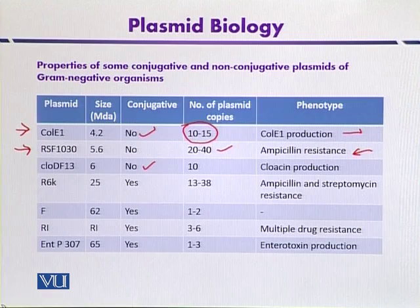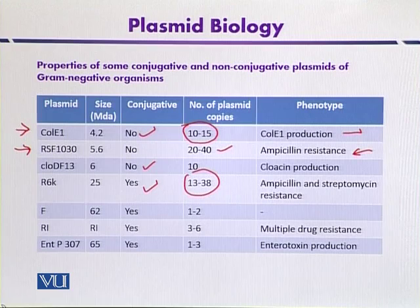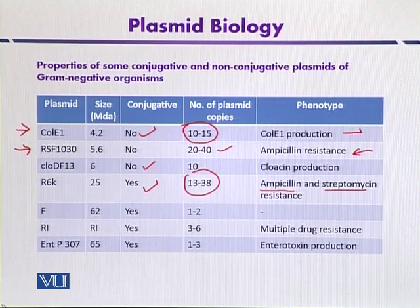R6K is an example of a conjugative plasmid but it is an exception. As noted, conjugative plasmids typically contain low copy numbers, but R6K is an exception because it contains a high copy number and at the same time carries two selectable markers — resistance to both ampicillin and streptomycin.